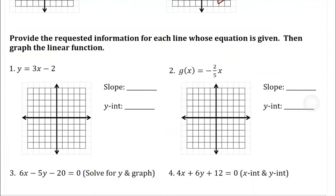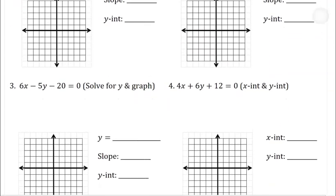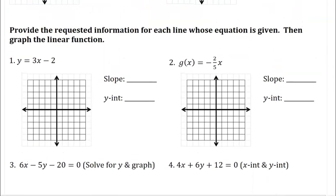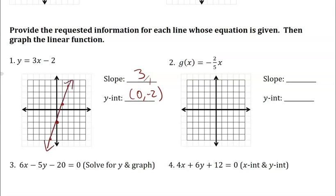For these equations, find slope, y-intercept, and graph. First: slope is 3, y-intercept is negative 2. Start at (0, -2), count up 3 and right 1 for additional points, then draw the line. Second: slope is negative 2/5, y-intercept is 0, so the line passes through the origin. Count down 2 and right 5, and also up 2 and left 5 for an extra point, then connect and draw arrows.